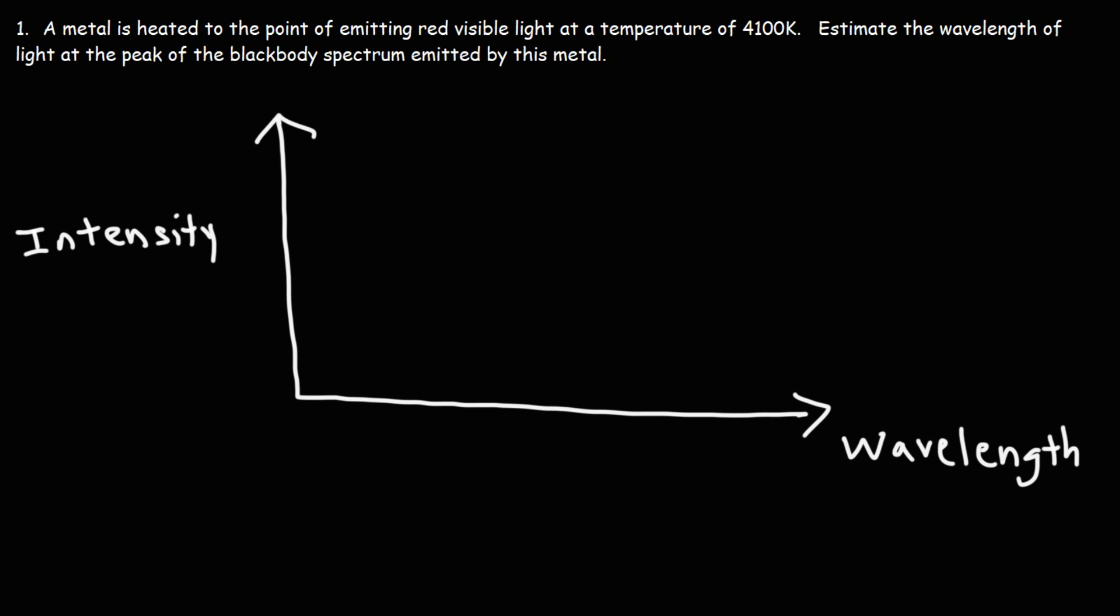You might be wondering, what is a blackbody? A blackbody is an ideal object, not necessarily a real object, but an ideal object that can absorb all forms of electromagnetic radiation. And since no light is reflected, it's going to appear black.